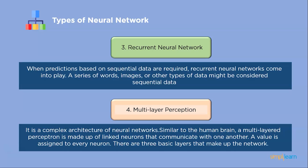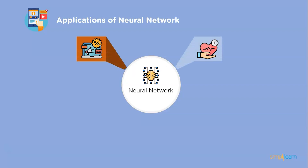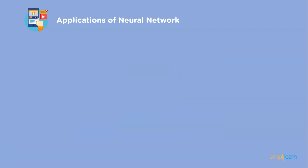Those are the important types of neural networks. Now we will look at real-world applications: medical care, sales and marketing, personal assistance, and social media.